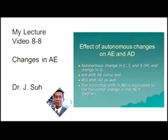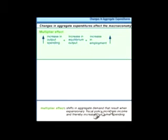Think about the multiplier effect. A small change in autonomous spending has the potential to bring about a huge change in equilibrium output. When equilibrium output increases, that means an increase in employment and maybe an increase in the standard of living. A decrease in autonomous spending can reduce equilibrium output by quite a bit, and this may be necessary in some cases to keep the economy from overheating.